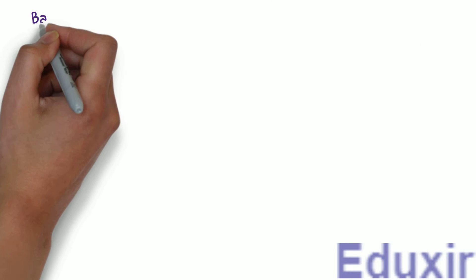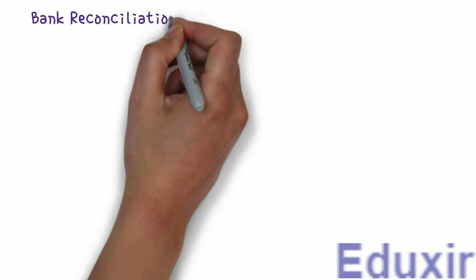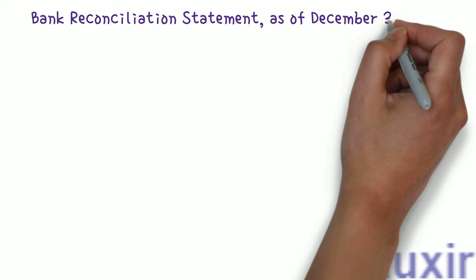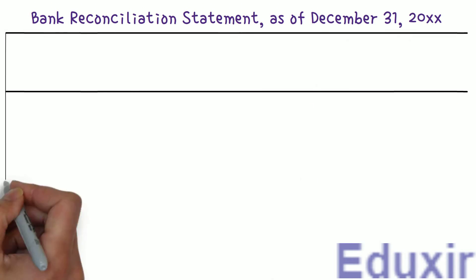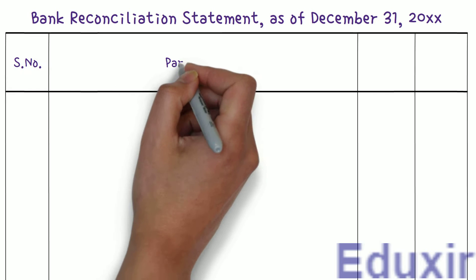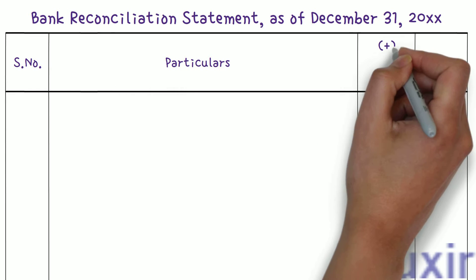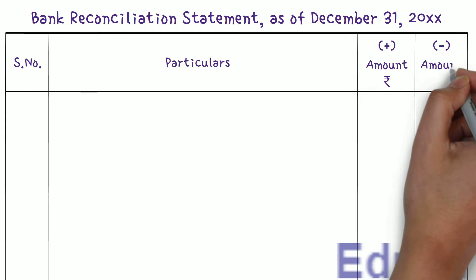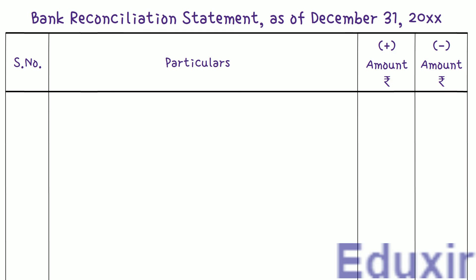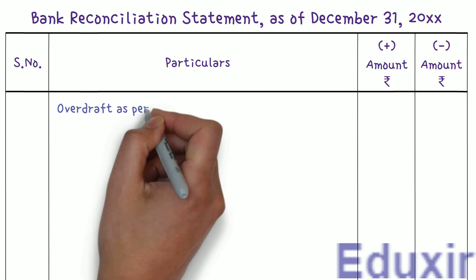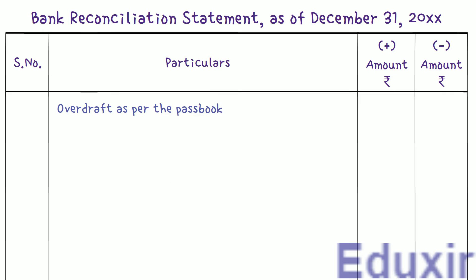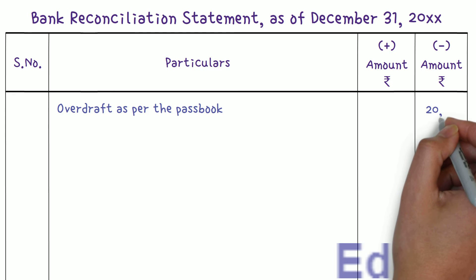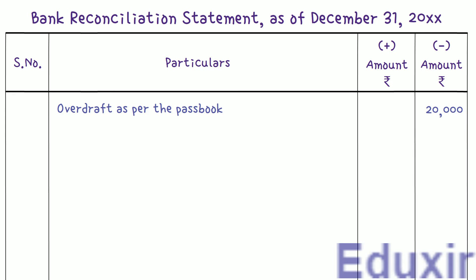Let us first write the title as Bank Reconciliation Statement as of March 31st, 2000+. We will have individual columns for serial number, particulars, amount to be added, and amount to be deducted. Let us first write the particulars as 'Overdraft as per the passbook.' As this is a debit or unfavorable balance in the passbook, we write this amount of 20,000 rupees in the minus amount column.